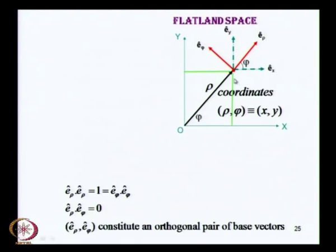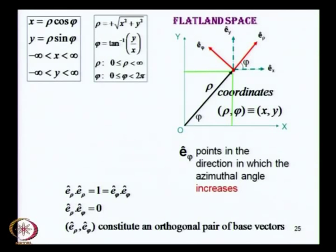The interesting thing is that if the object were located at a different position, the direction of e_rho would obviously be different — along the position vector from that new point — and e_phi would also be in a different direction. So e_rho and e_phi are not constant vectors; they will change from point to point. Whereas e_x and e_y are constant vectors, always along the Cartesian x and y axes respectively. e_phi always points in the direction in which the azimuthal angle increases from wherever that point is.